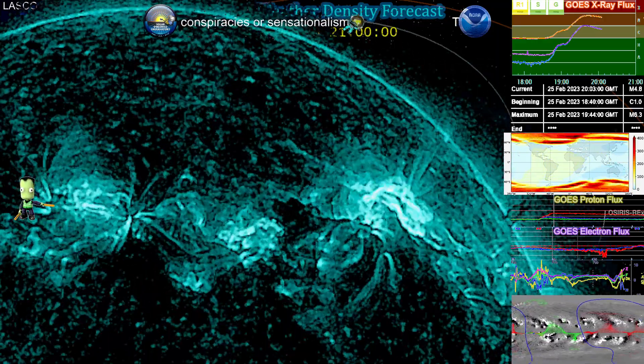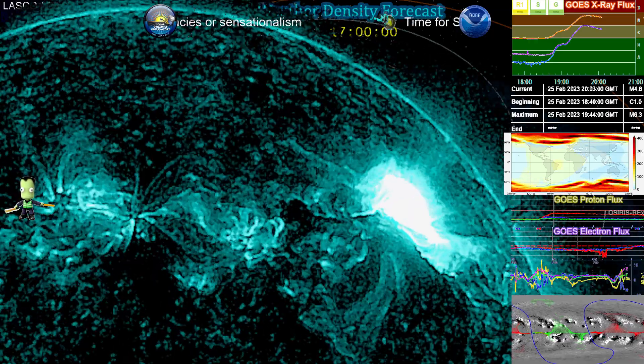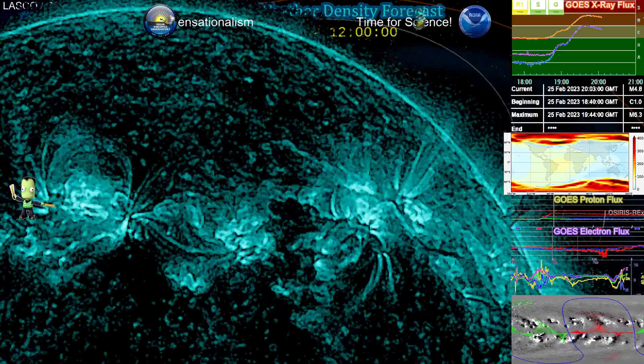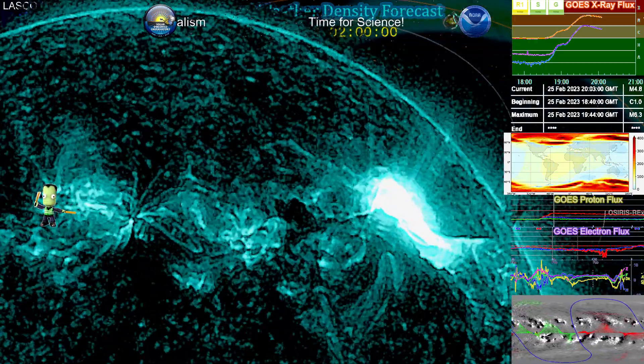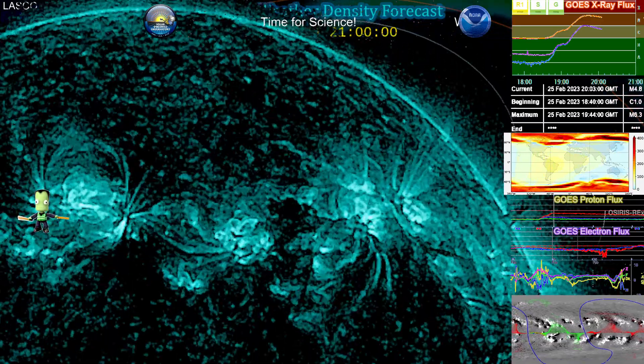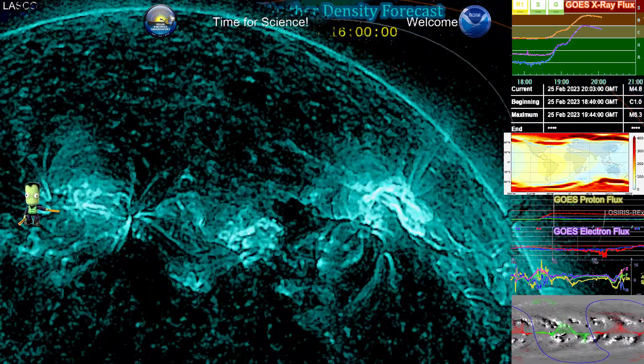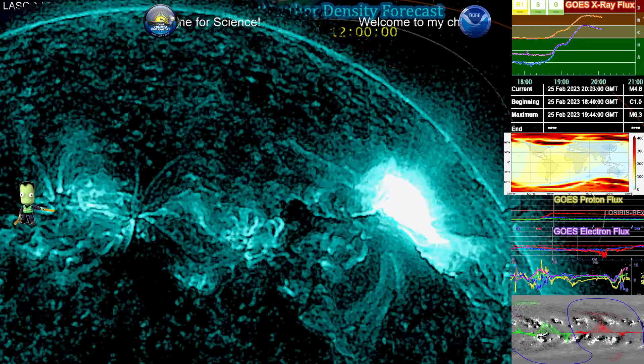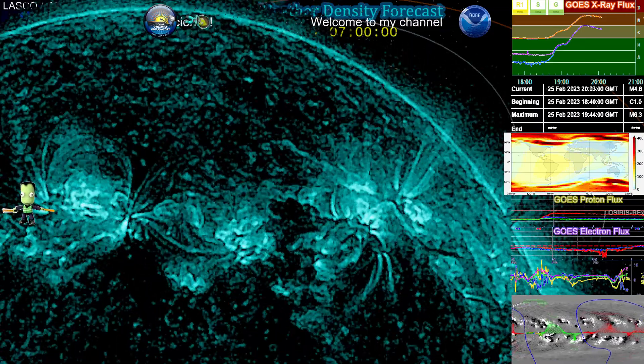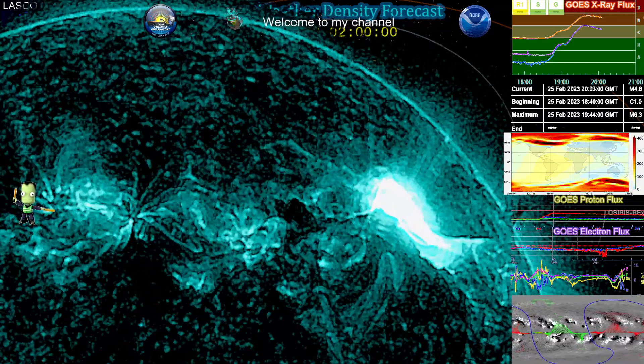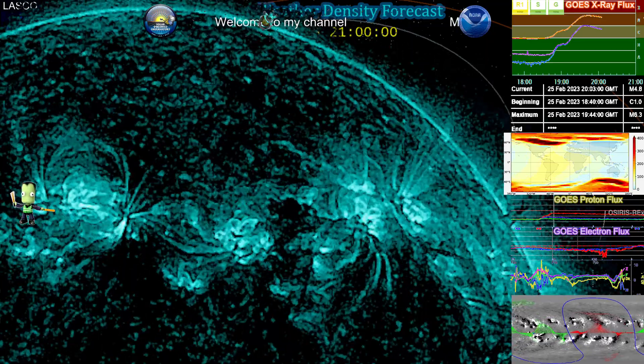And then we're seeing activity reaching all the way over to Region 3234 on the far left, or eastern end here. That is still ongoing, so we'll see what happens with that. But currently I don't see a CME coming from that region itself, but it definitely is having some small isolated flares.